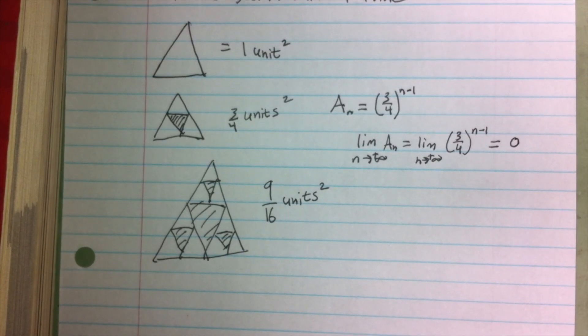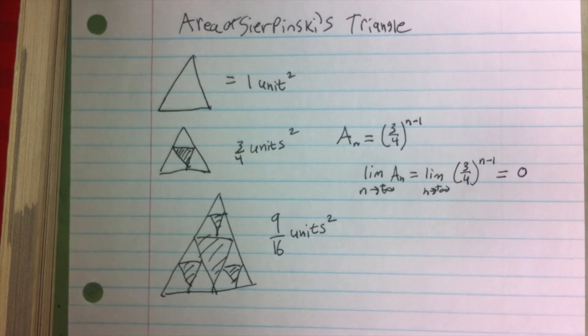And so the area of Sierpinski's Triangle, as we continue to cut triangles out of it, is going to be equal to zero units.